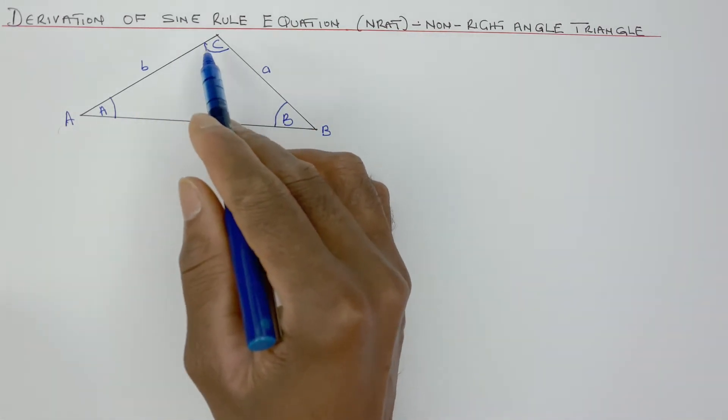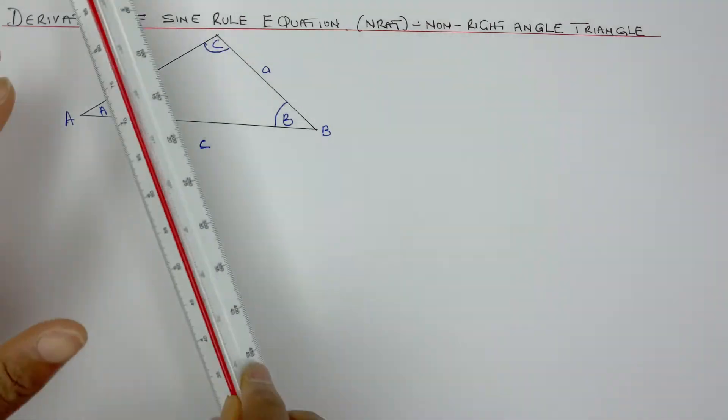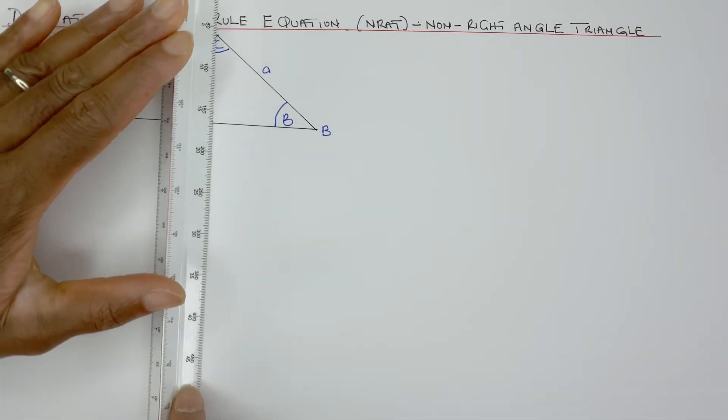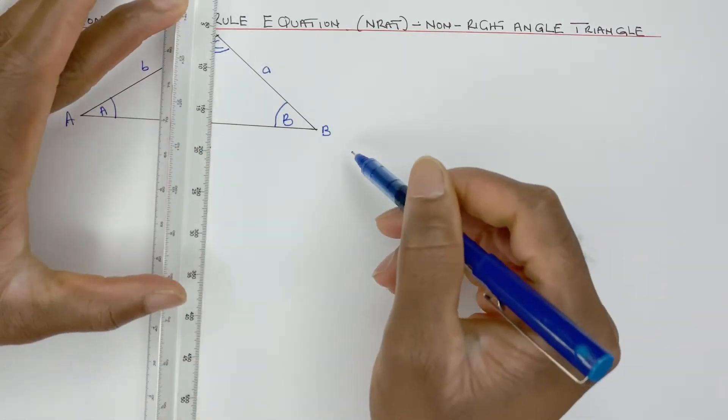None of these angles, as I said, are 90 degrees. If I draw a line from up here to there, a perpendicular line to AB.